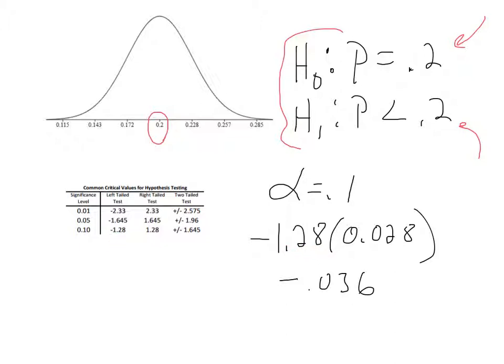So, I took the negative 1.28, multiplied it by 0.28. That's the standard deviation. They got that number. And then I got to take that away from 20, or 0.2. And that worked out to be this value here. And now we're getting to that whole idea of a rejection region.